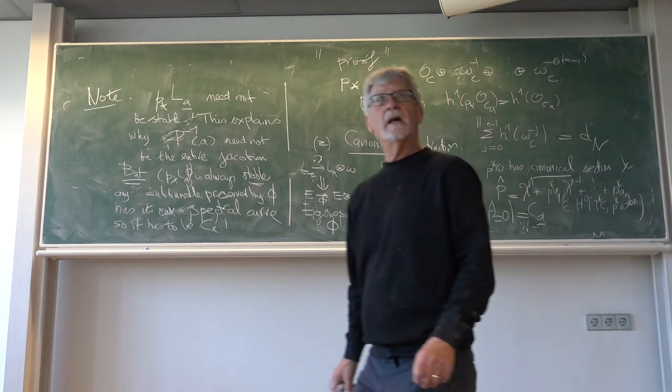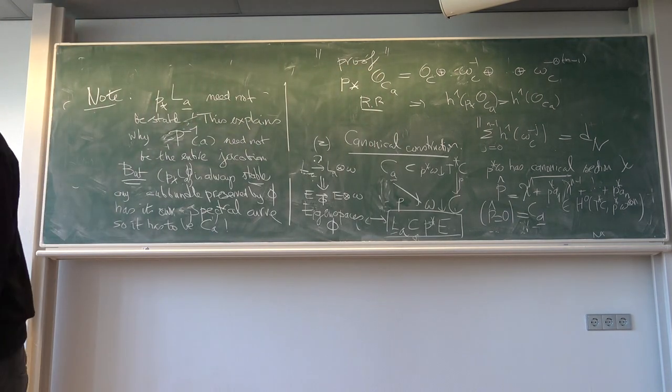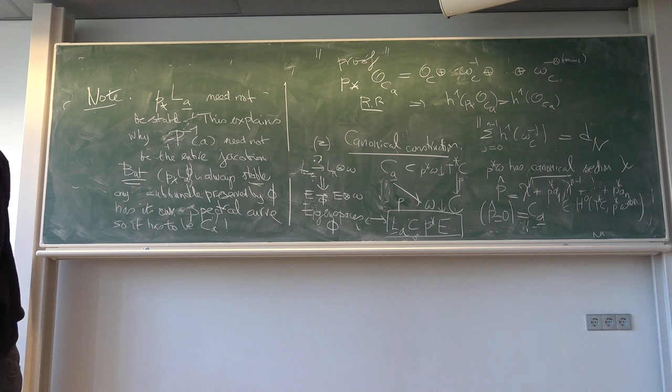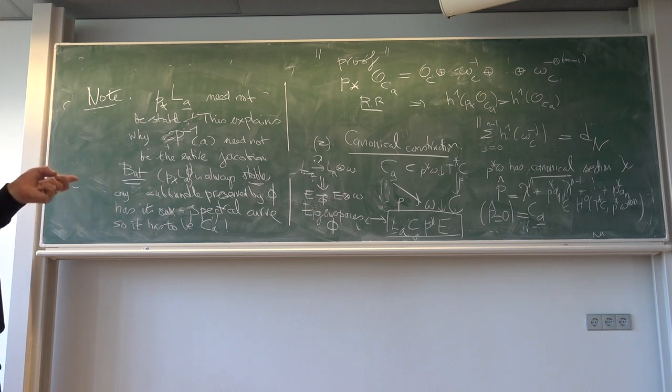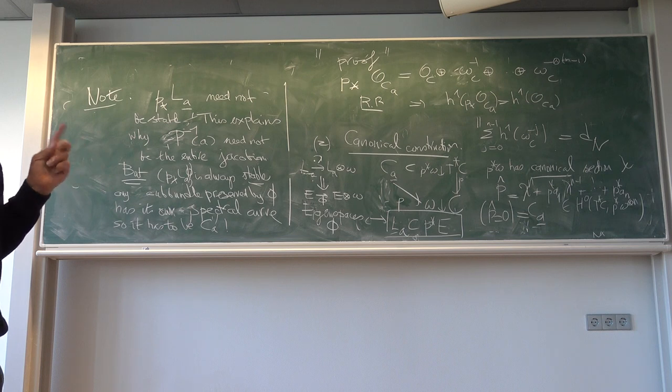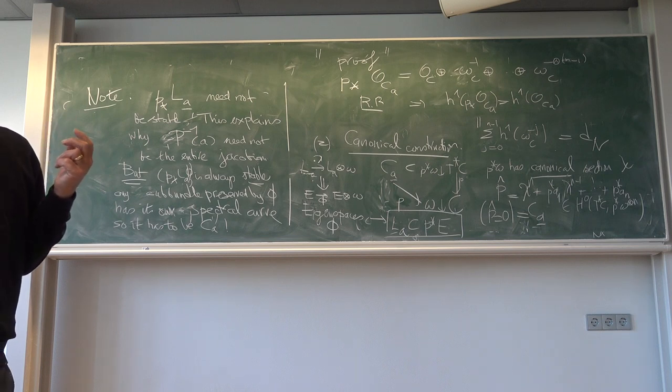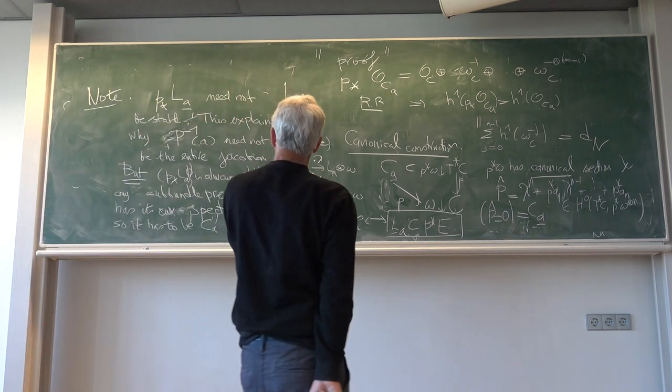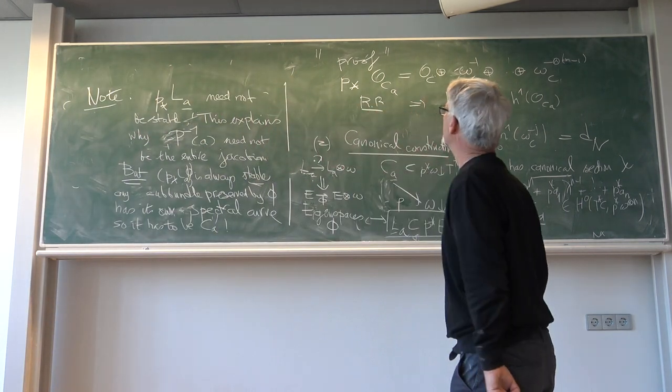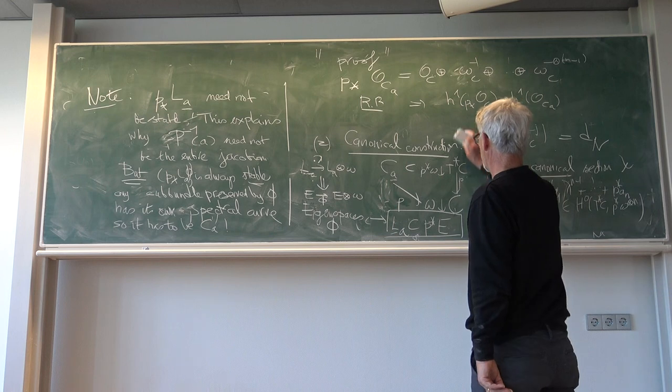Now maybe I should give an example. I need to do two things. First thing is an example showing you that it can fail. And secondly is how Prym varieties come up. So, maybe I can erase this.